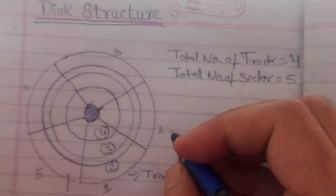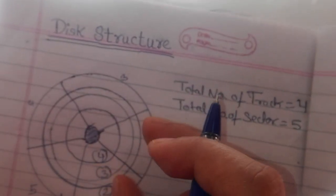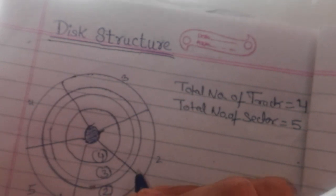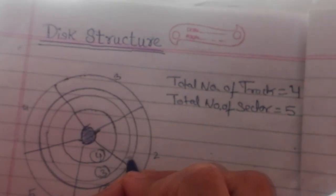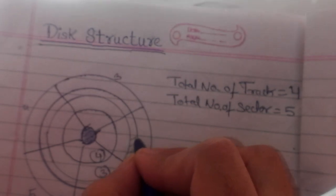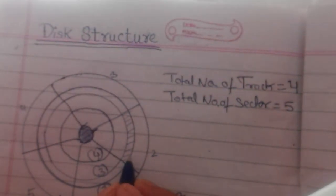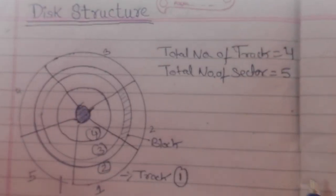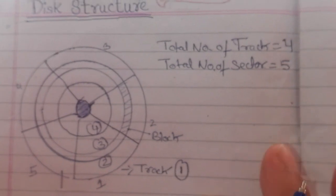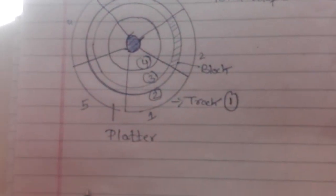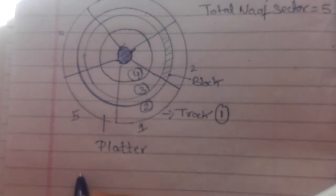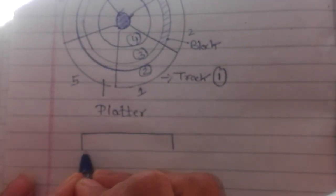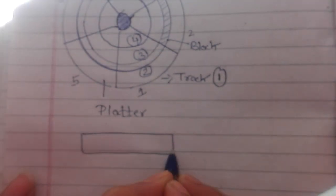Now one more term is block. A block is the data stored per sector. This is also known as block. Suppose I draw a diagram for a block — I will take this as a block.